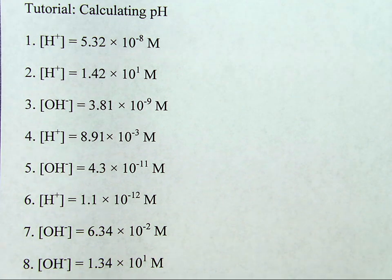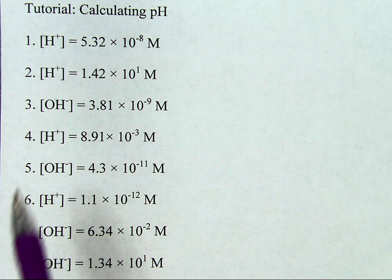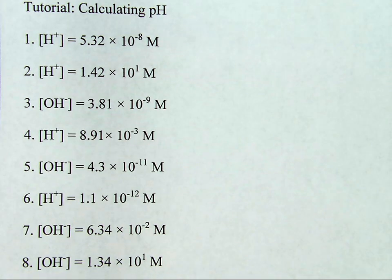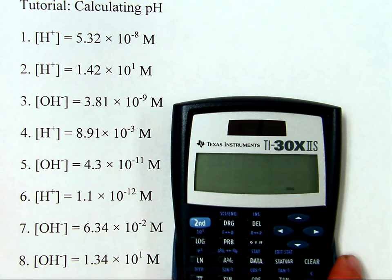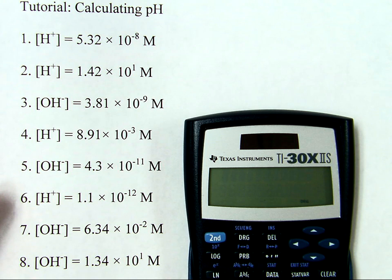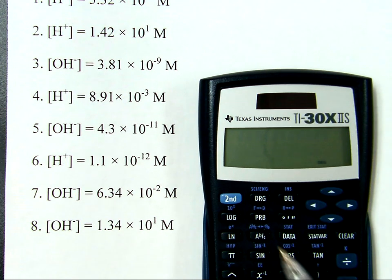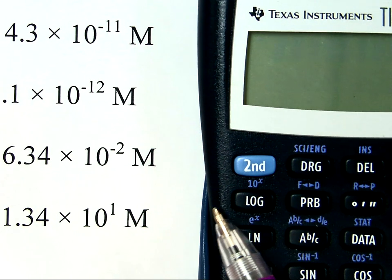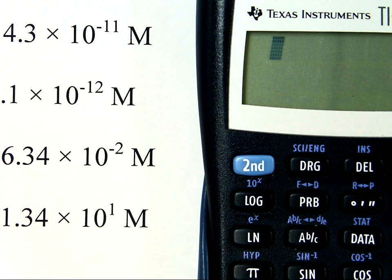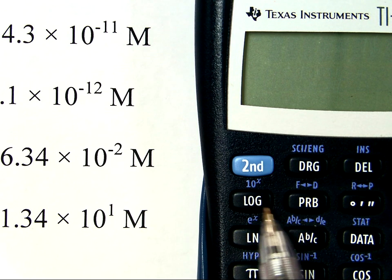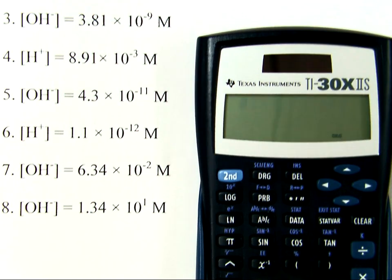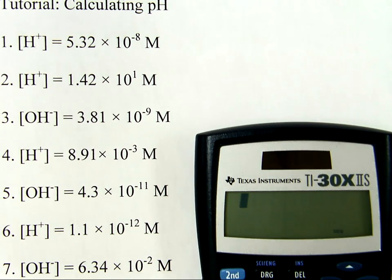Let's talk about how to go about calculating the pH based on the concentration of either hydrogen ion or hydroxide ion. In doing this, the actual process itself is very mathematically simple. I'm going to bring the calculator into view so that you, the viewer, can see what's going on here. It involves using the log button of your calculator. It varies from calculator model to calculator model, but when you're dealing with pH, you're going to be dealing with the log button.